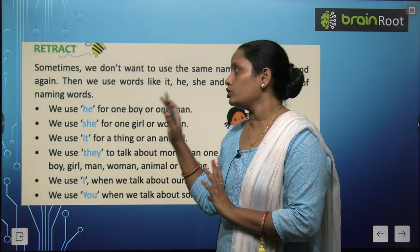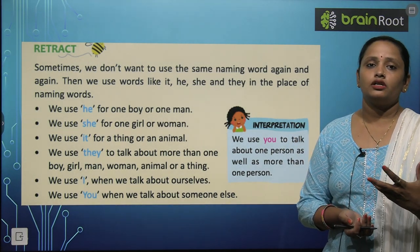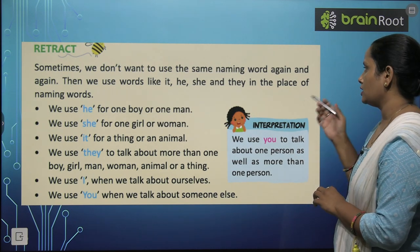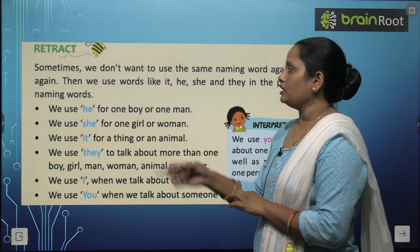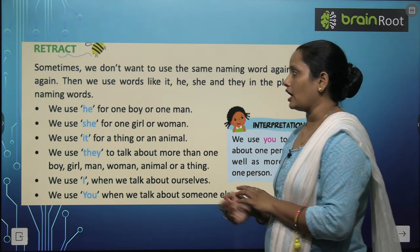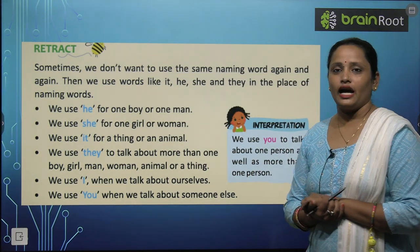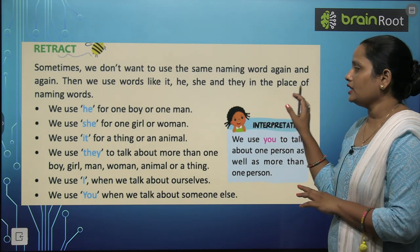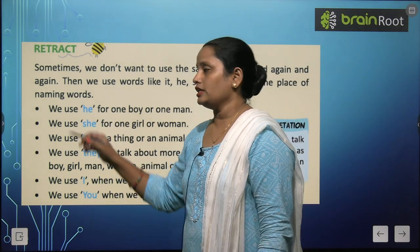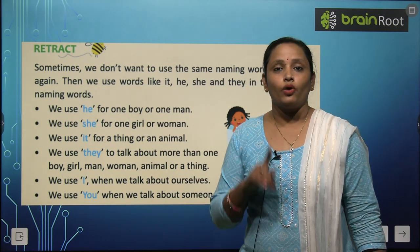So sometimes we don't want to use the same naming words. Now we have studied pronouns — we use them in place of naming words. So when we don't want to use the same naming words, we use words like It, He, She and They in the place of naming words. Let's read the points. First one is: we use He for a boy or one man.